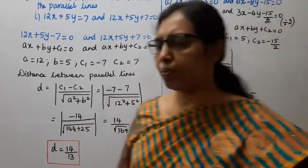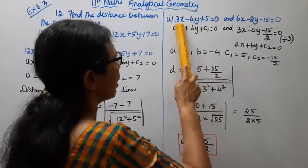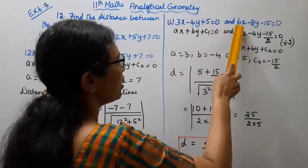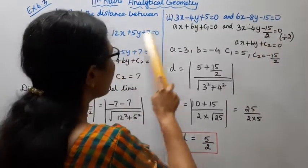Second subdivision: two parallel lines - 3x minus 4y plus 5 equal to 0 and 6x minus 8y minus 15 equal to 0.